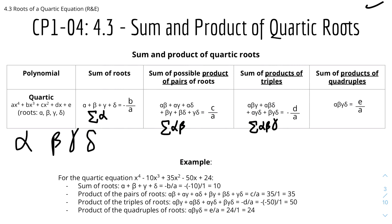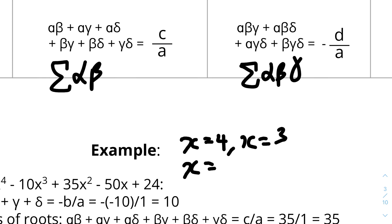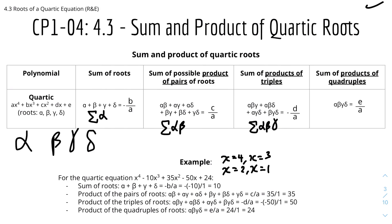For example, consider the quartic equation x⁴ − 10x³ + 35x² − 50x + 24 = 0. Using a calculator to find the roots, we get x = 4, x = 3, x = 2, and x = 1. Let's keep that in mind as we verify the formulas.